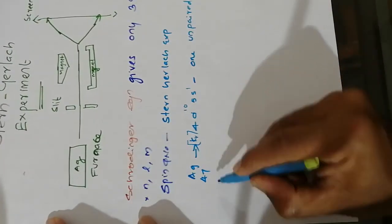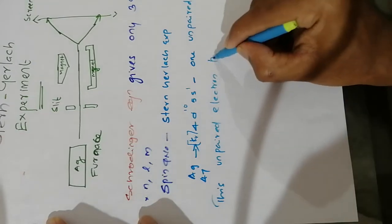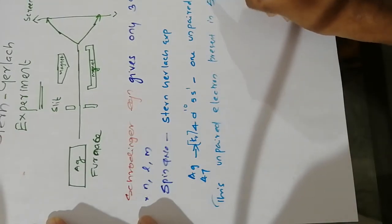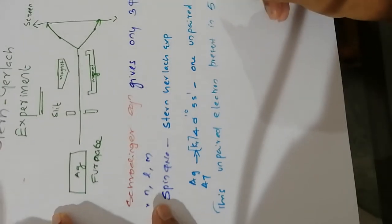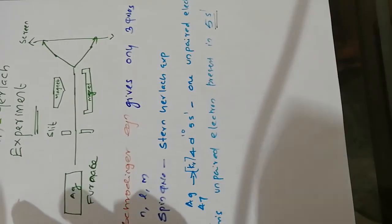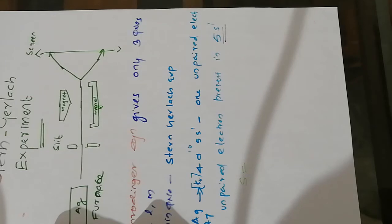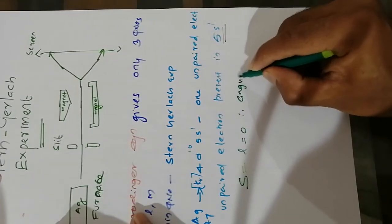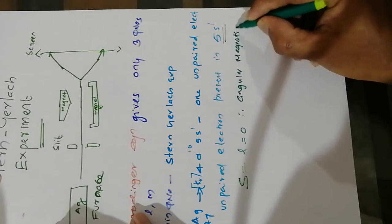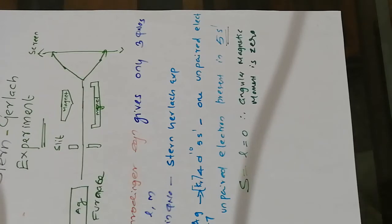This unpaired electron is present in the 5S1 orbital. Because the electron is in the 5S orbital, the magnetic moment due to orbital motion is zero. Remember: magnetic moment due to orbital motion is zero.